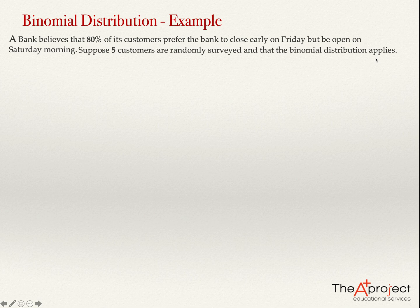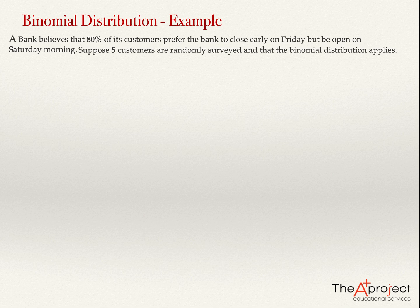For the binomial distribution to apply, the number of customers needs to be large. If you have only 10 customers, 80% of the customers is only 8 customers. If you serve one of them, now from the remaining 9 customers, it's not true that 80% of them prefer the Saturday option.